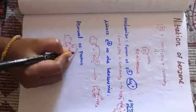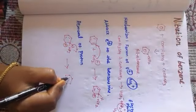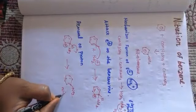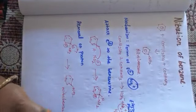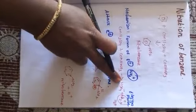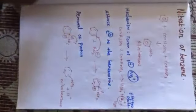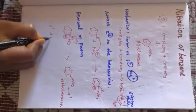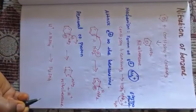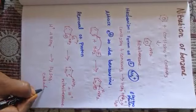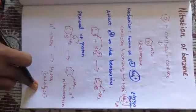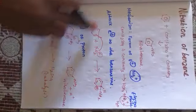The proton is removed and nitrobenzene is formed. This H⁺ reacts with HSO₄⁻ to form H₂SO₄, because H₂SO₄ is a catalyst in the nitration reaction — it enters the reaction again and repeats the same step.